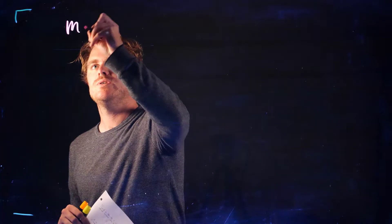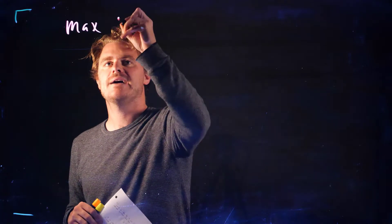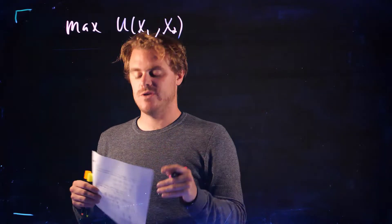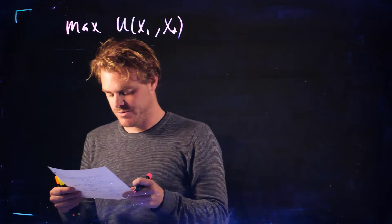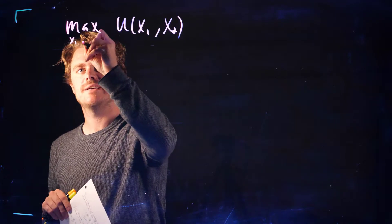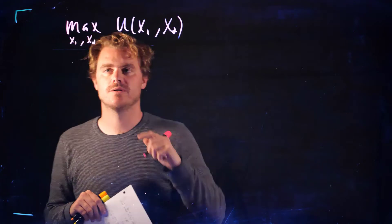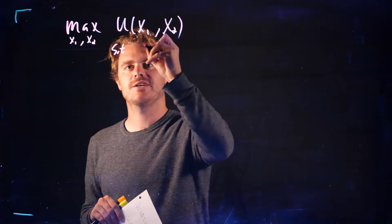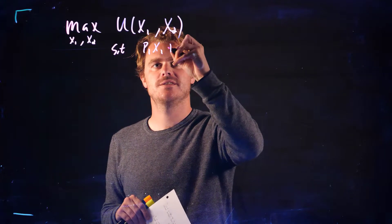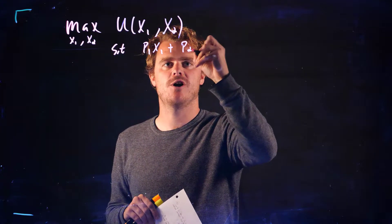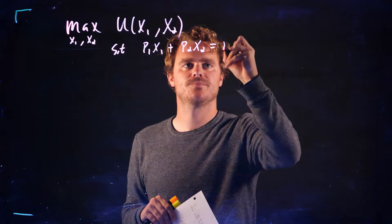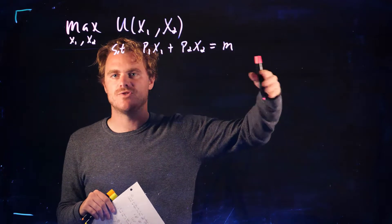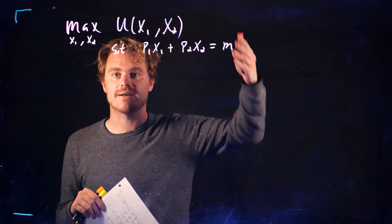Essentially what we want to do is we want to maximize our utility — maximize U1 and U2 — and what we get to pick is the amount of each good we're going to consume, subject to our budget constraint. This is essentially the problem we're facing. And we can think of a couple of methods from calculus to solve for this maximization.